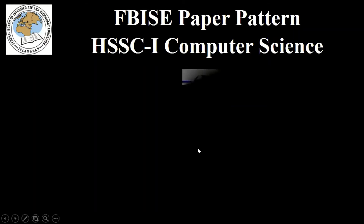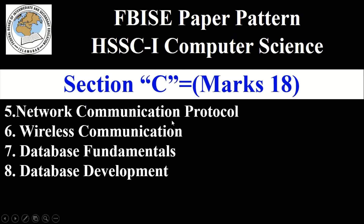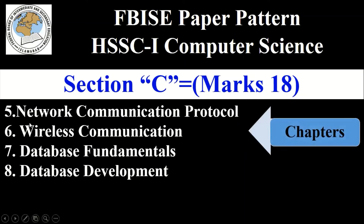The next section is Section C, which also has 18 marks. It covers the following chapters: Chapter 5 — Network Communication Protocol, Chapter 6 — Wireless Communication, Chapter 7 — Database Fundamentals, and Chapter 8 — Database Development. These four chapters are included in Section C, which has 18 marks.